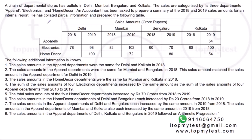Let's get started. A chain of department stores has outlets in Delhi, Mumbai, Bangalore, and Kolkata. Sales are categorized by three departments: apparel, electronics, and home decor. An accountant has been asked to prepare a summary of 2018 and 2019 sales amounts. He collated partial information and prepared a table — four cities, three departments, two years gives 24 data points, of which roughly half is missing. You have to fill up these values using the given information.